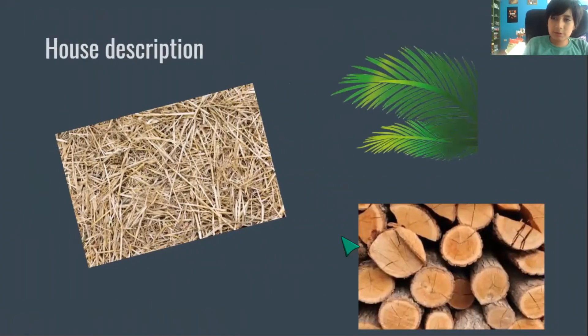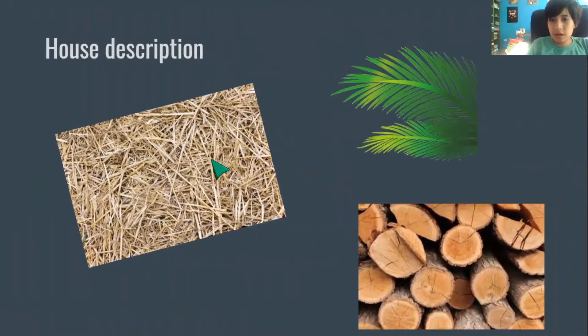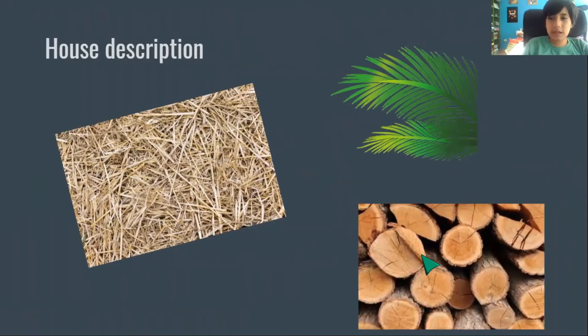House description. The Ashanikas houses are made of straw, palm trees, and wood.